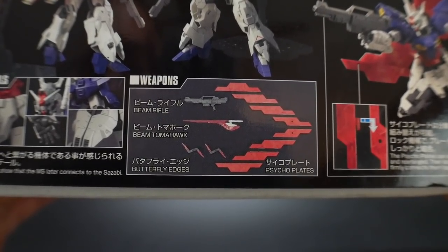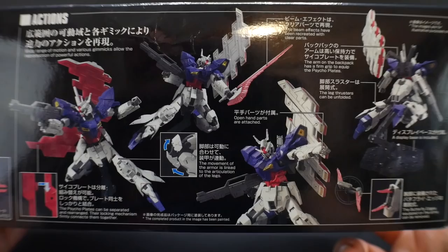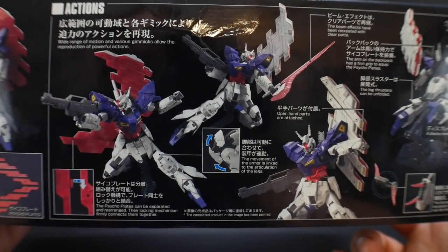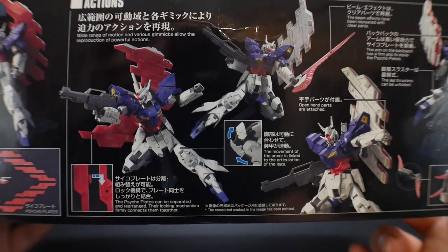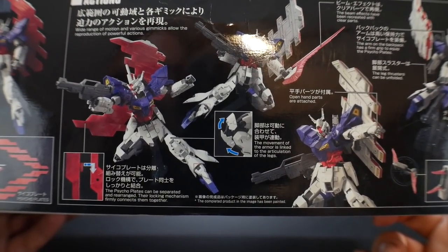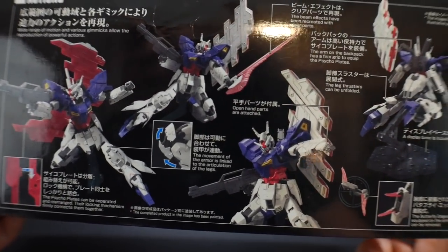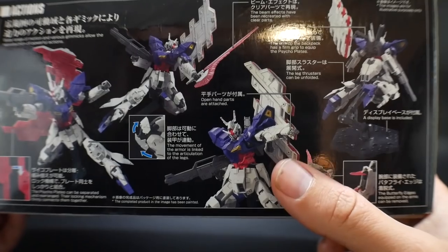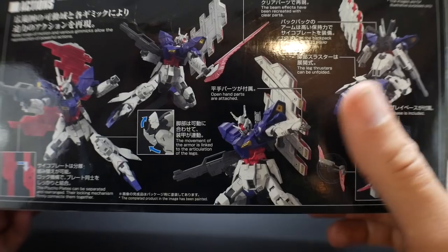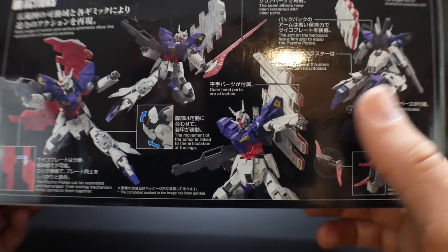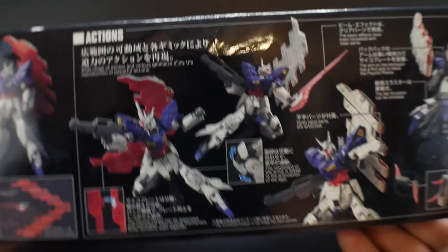For the weapons, you see all the cycle plates, the butterfly edges, the beam tomahawk, and the beam rifle. Looking over here, you're going to see some more of the nice little poses and all the gimmicks. So overall, you see the wide range of motion. It's definitely going to have some really good posability. The gimmicks with the knees, the backpack, are very versatile. They can be used as a shield, funnels, or just put on the back itself. And they fold in or open to make the little crescent shape.